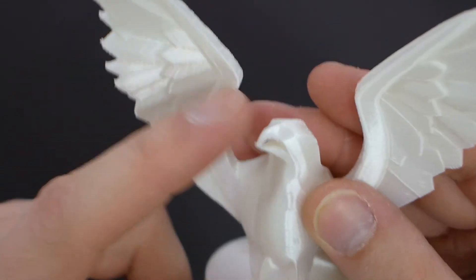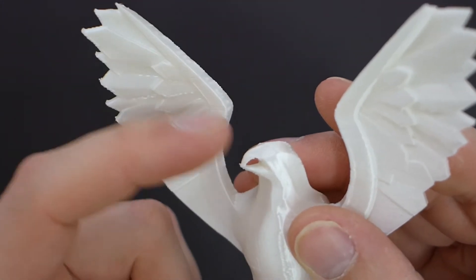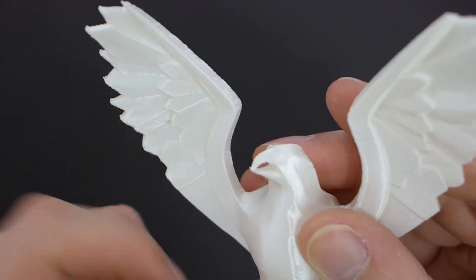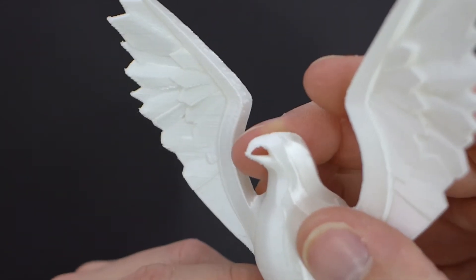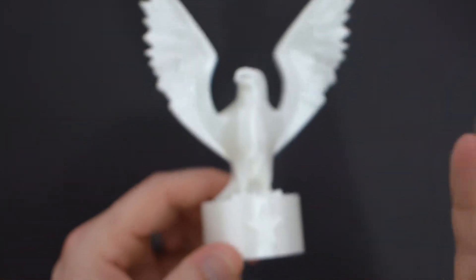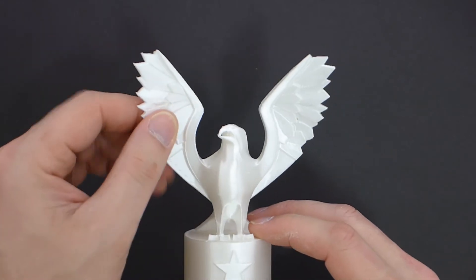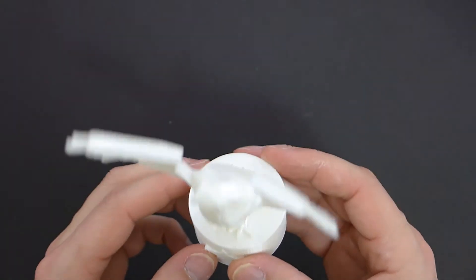The wings here, those tips came out great. There's no support on this model whatsoever. Look at the beak in there, that's really nice. There's no strings whatsoever. This is with standard PLA settings. There were no extra retraction settings I had to do. Just throw on my PLA settings and let it go.